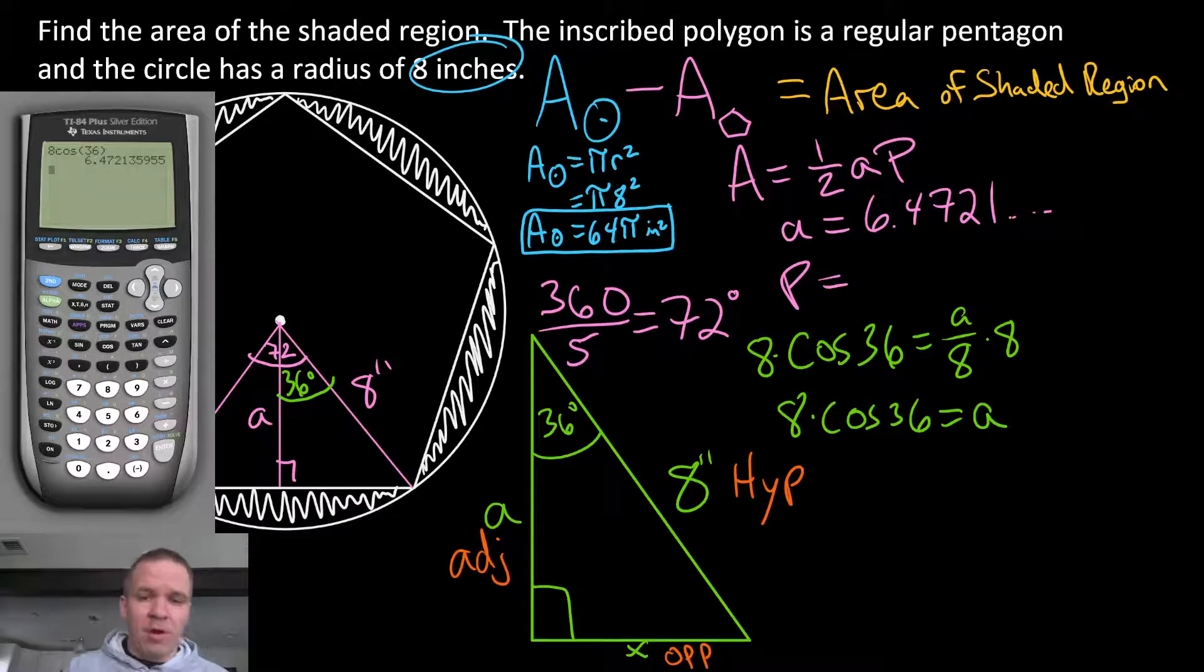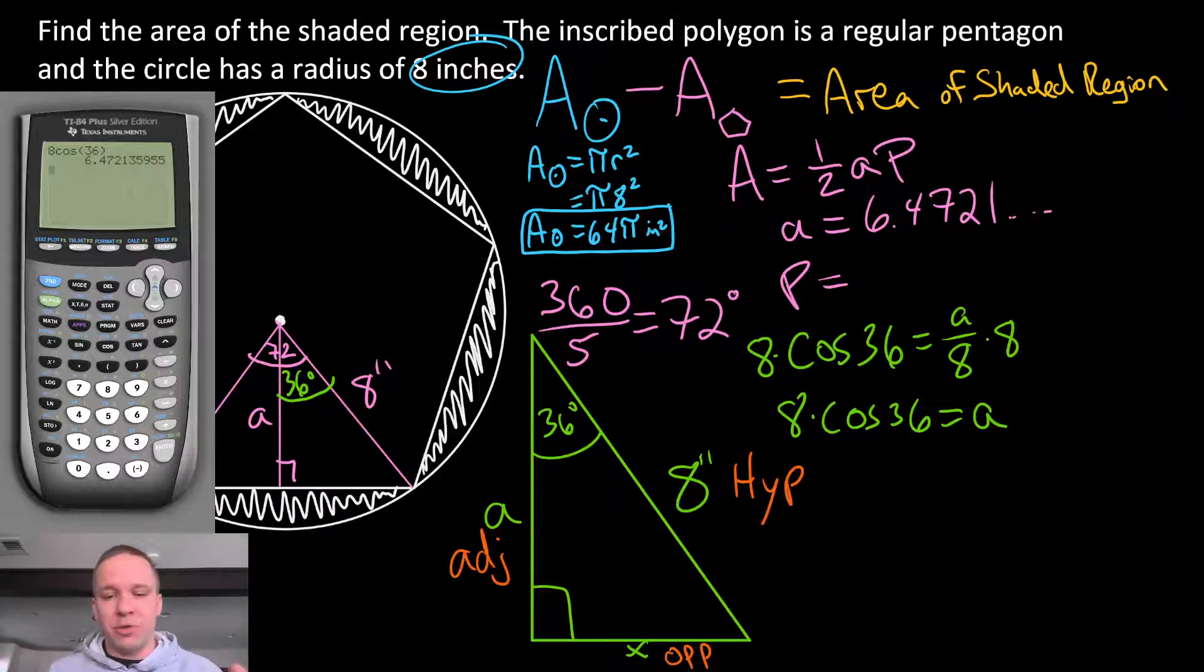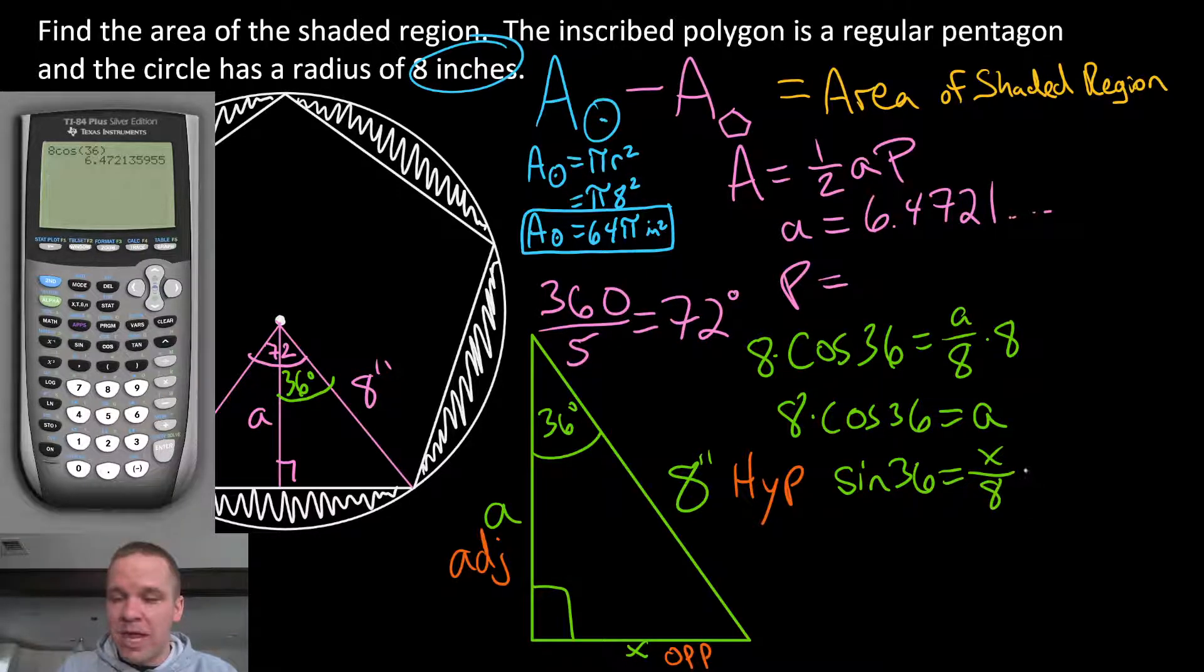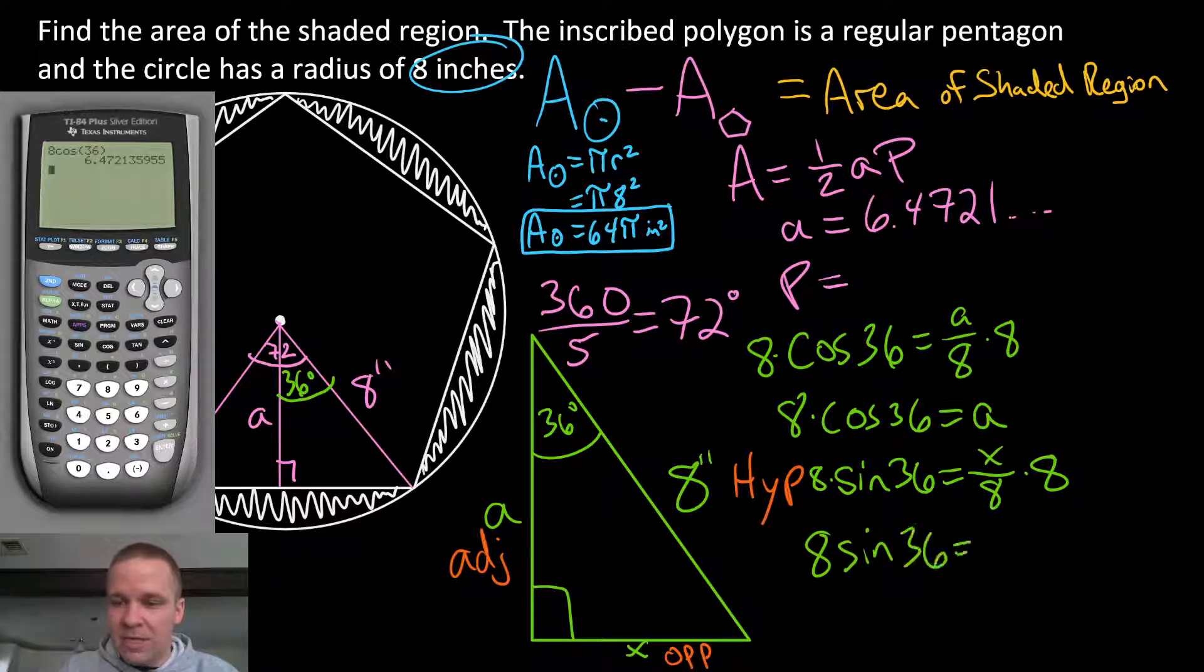So I've got that length. That is my apothem. Let's go ahead and write that down. So I'm going to have 6.4721, and I'm just going to put the dot, dot, dot after that, saying, hey, it's going on forever. At least I can find it in my calculator. So there we go with that. Now, my perimeter, I need to find out my perimeter. So that means that I need to get that opposite side, x. So for that one, I'm going to set up a separate trig function. So if that's my opposite, and I know my hypotenuse, that's going to be sine, SOHCAHTOA. So I'm going to have sine of 36 is equal to my opposite, which is x, divided by my hypotenuse, which is eight.